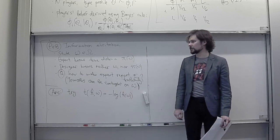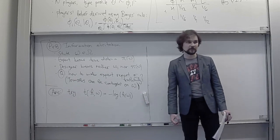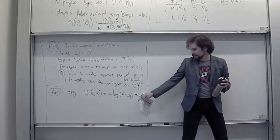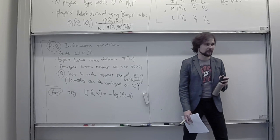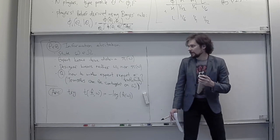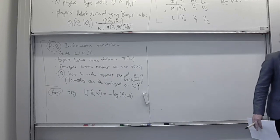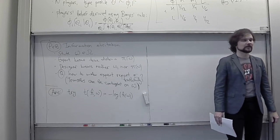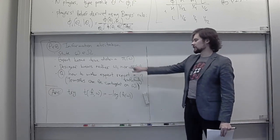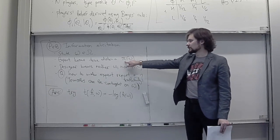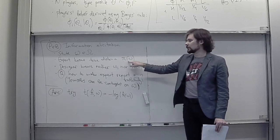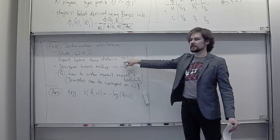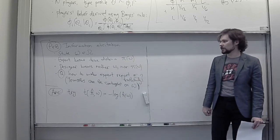These transfers do the job: if you pay the agent the amount in dollars equal to the log of the probability pi-hat that their report assigns to the state omega that actually realized, this makes it strictly optimal for the expert to report the true distribution pi. It might seem weird that the transfer is contingent on the actual realized state omega — let me give you an example to make it clearer.